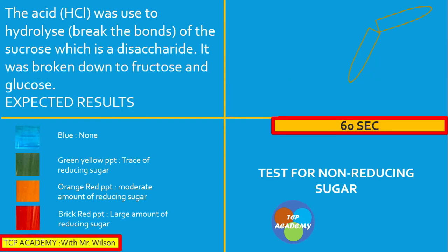Hydrochloric acid will be used in this experiment. Hydrochloric acid is used to break the bonds of the sucrose, which is a disaccharide, breaking it down into glucose and fructose. Here we have added the sucrose solution to the boiling tube and are now adding one centimeter cube of hydrochloric acid to the mixture.